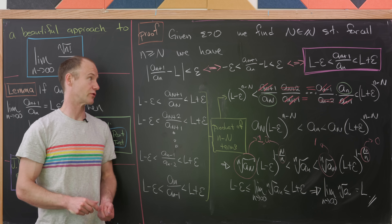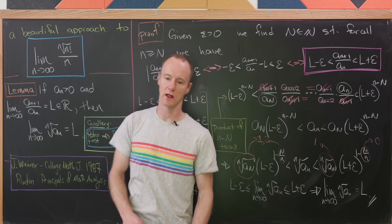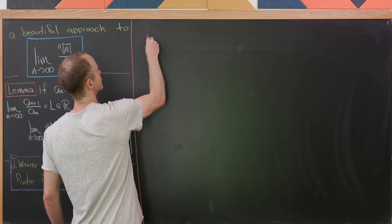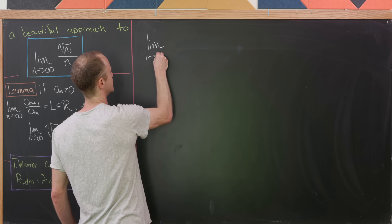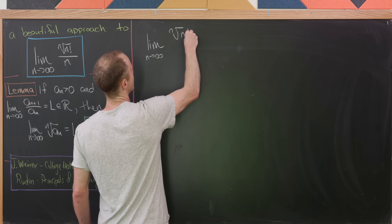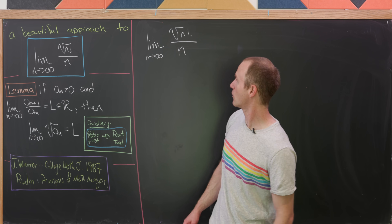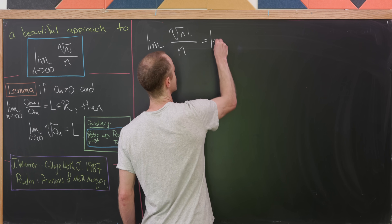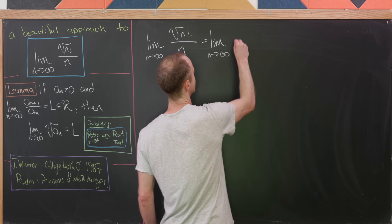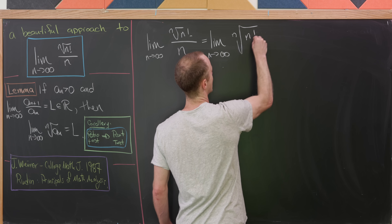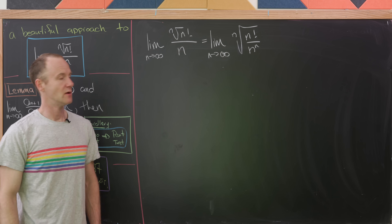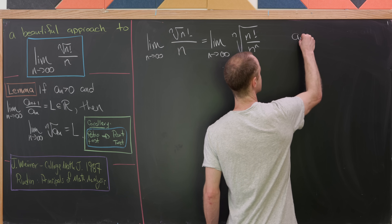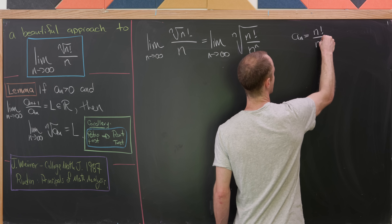Now we're ready to evaluate our goal limit. We have the limit as n goes to infinity of the nth root of n factorial over n. To use the lemma, we rewrite this as the nth root of (n factorial over n^n), so let a sub n equal n factorial over n^n. Then a sub (n+1) equals (n+1) factorial over (n+1)^(n+1).